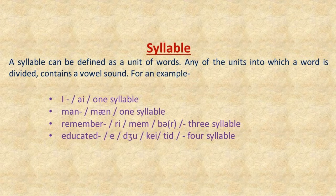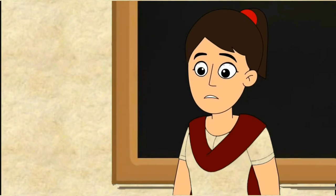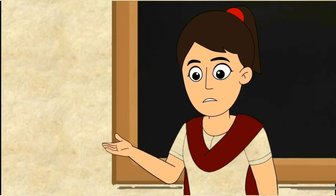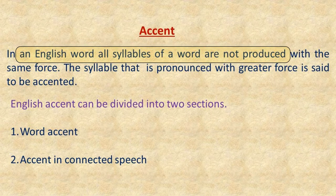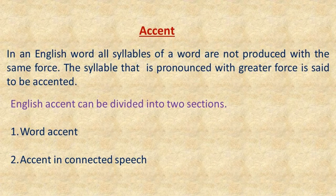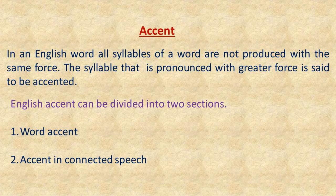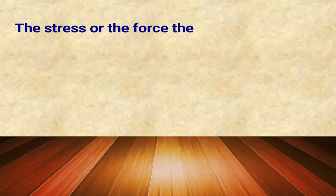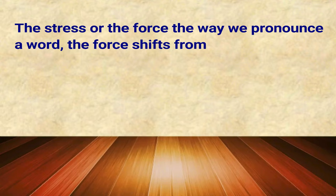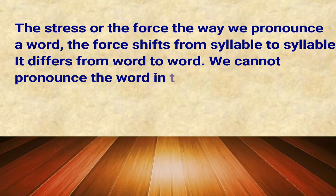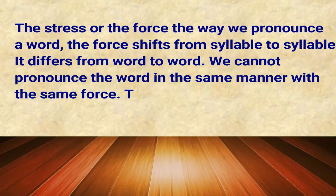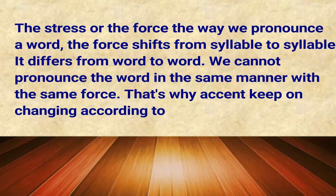Now you know about a syllable — let's talk about accent. In an English word, all syllables are not produced with the same force. The syllable that is pronounced with greater force is said to be accented. The stress or force we use shifts from syllable to syllable; it differs from word to word. We cannot pronounce all words with the same force — that's why accents keep on changing according to the syllable.